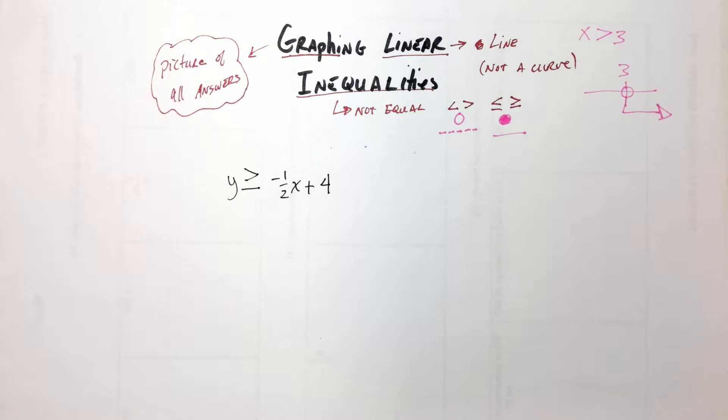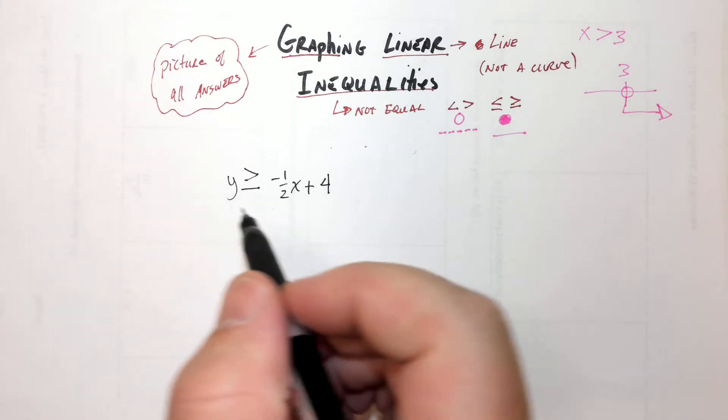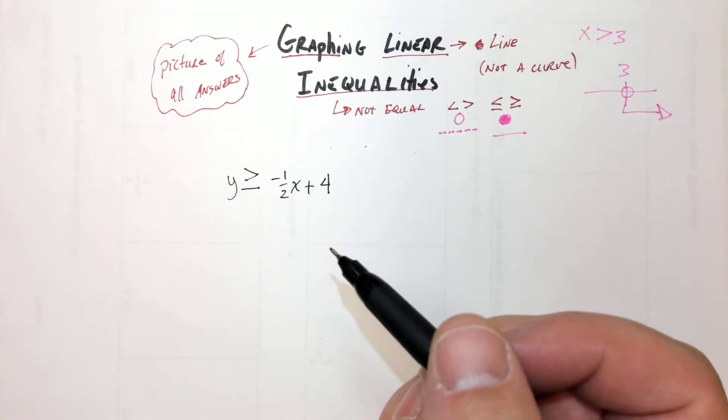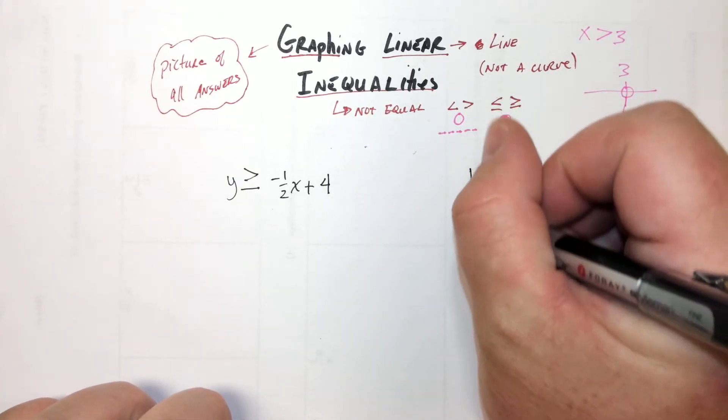How many answers are there to this equation? For this inequality? As far as the line go? As far as for, like as many as you want, right? That's infinite. So we can't actually write it, but we can draw a picture. So what we're going to do is we're going to graph it.